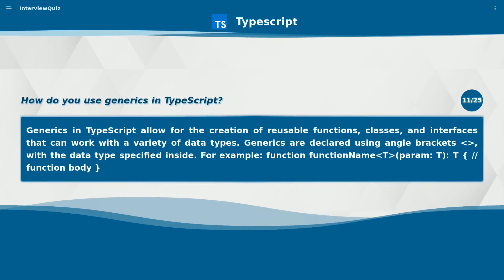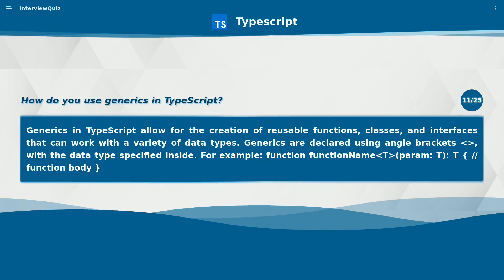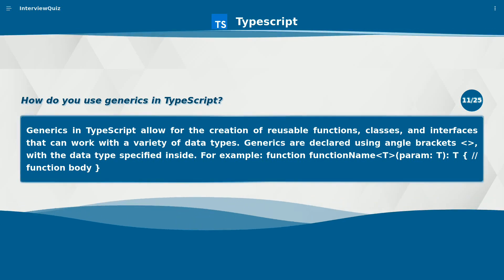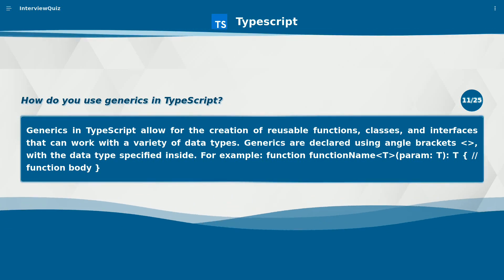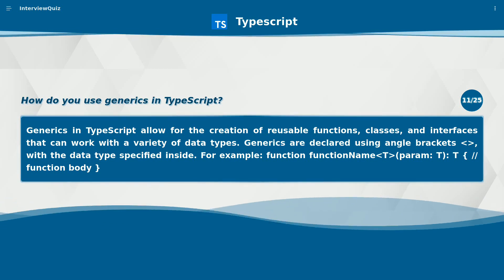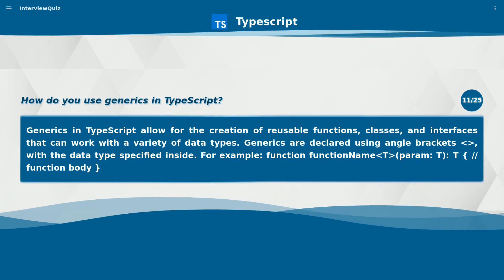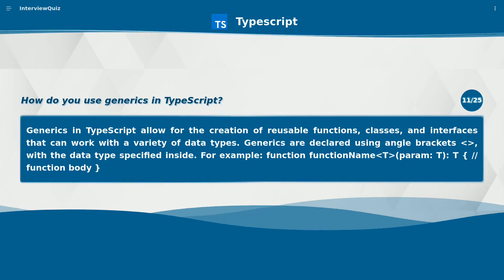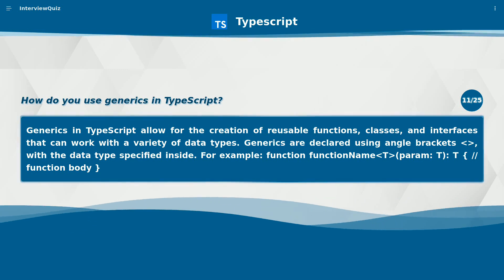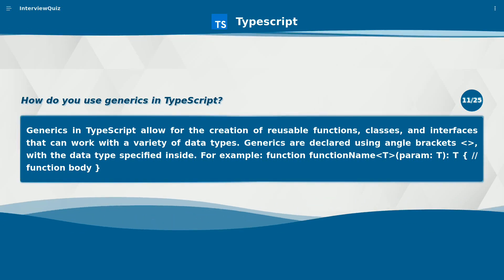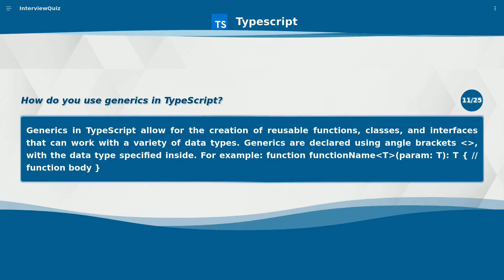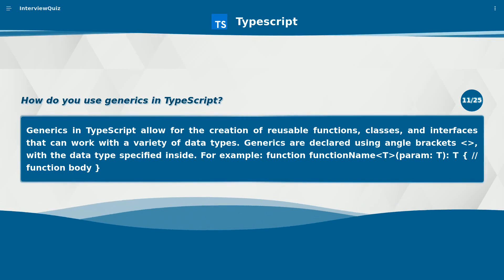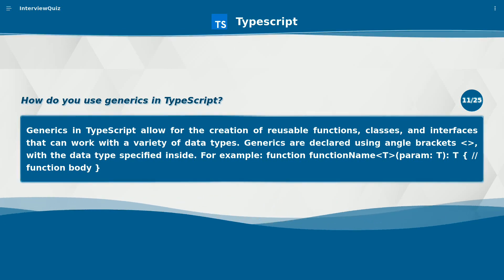How do you use generics in TypeScript? Generics in TypeScript allow for the creation of reusable functions, classes, and interfaces that can work with a variety of data types. Generics are declared using angle brackets with the data types specified inside. For example: function functionName<T>(param: T): T { // function body }.